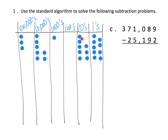We have to do some cashing in. I'm going to go two columns over because the hundreds column has nothing. So I'm going to take this thousands disk and cash it in for ten hundreds — one, two, three, four, five, six, seven, eight, nine, ten. And now that I have ten hundreds, I can cash one of these hundreds in for ten tens.